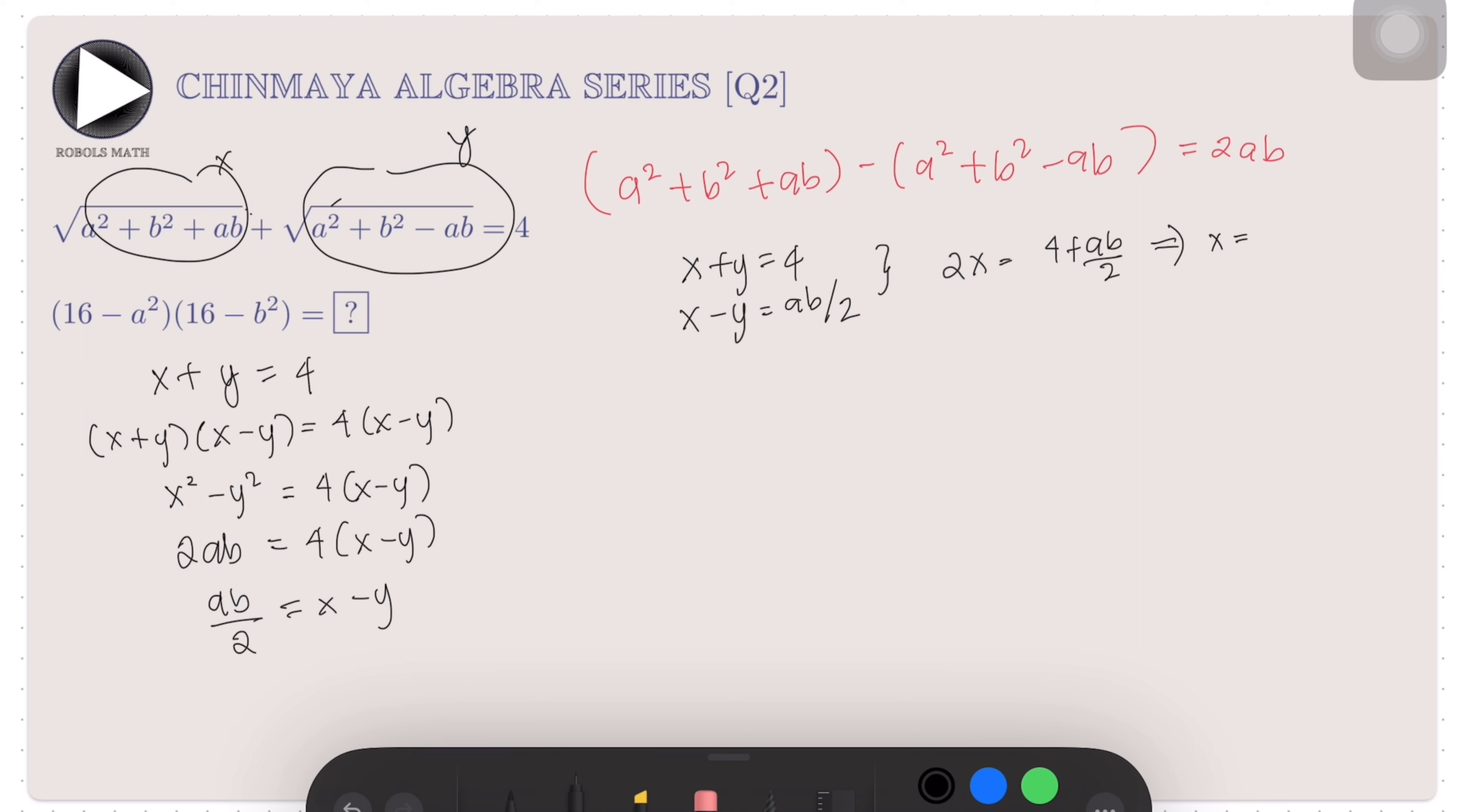x is equal to 4 divided by 2, that's 2, and then the ab/2 becomes ab/4. Therefore, we have x being equal to 2 + ab/4. We don't have to solve for y anymore because we are not really interested with x and y themselves; knowing x alone is enough, at least for our purposes in this solution.